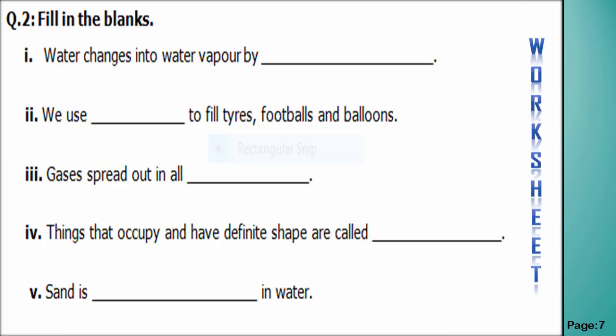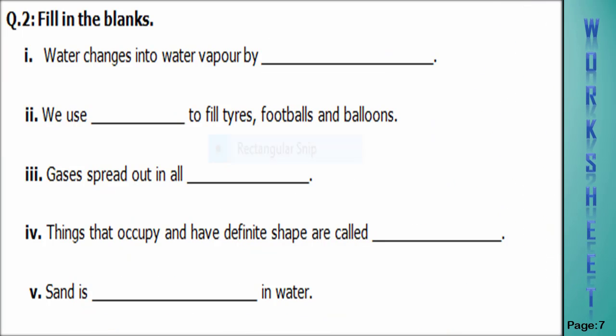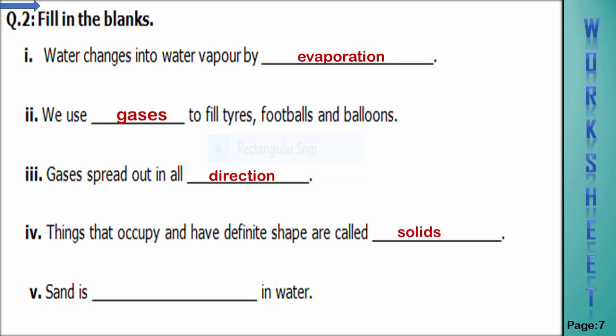Now students see question number two — fill in the blanks. Number one: water changes into water vapor by evaporation. Number two: we use gases to fill tires, footballs and balloons. Number three: gases spread out in all directions. Number four: things that occupy space and have a definite shape are called solids. Number five: sand is insoluble in water.